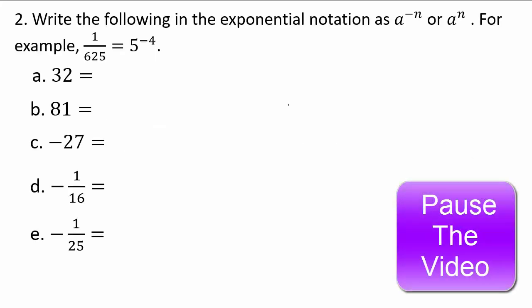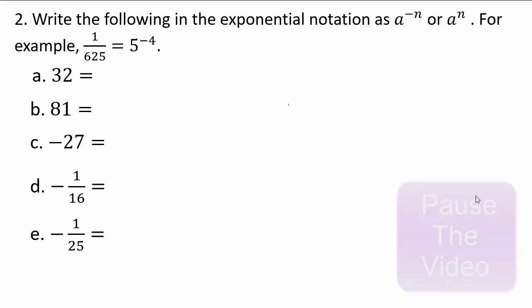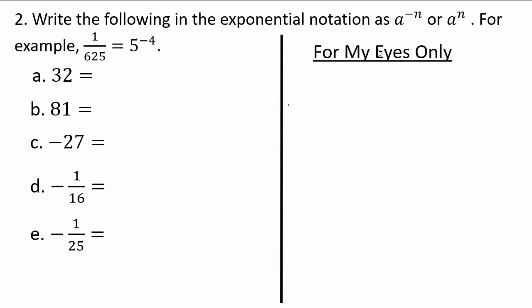Pause the video here and see what you can do. You are given a number, so do a factor tree to figure out what multiplied by itself gives you 32. We'll do the first one for you: 1 over 625. Remember, all your scratch work should be done in the 'for my eyes only' column on your notes.